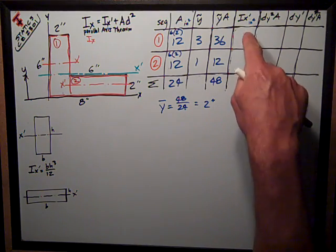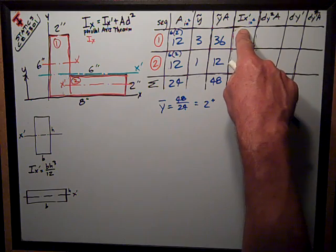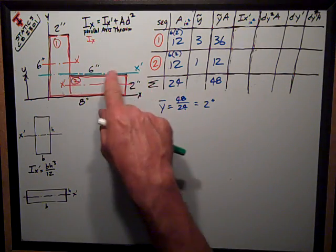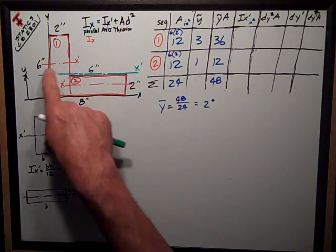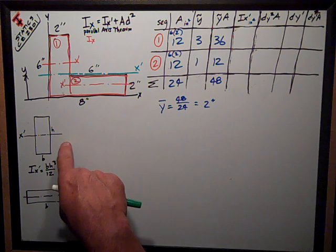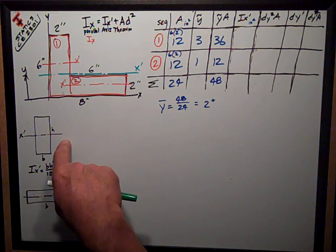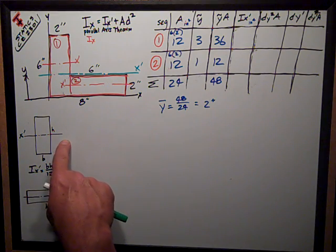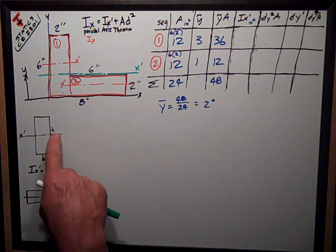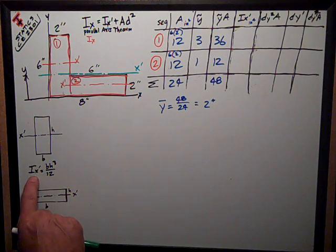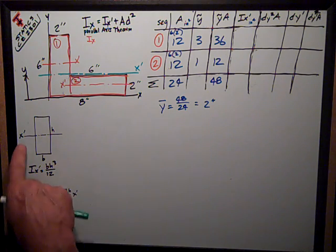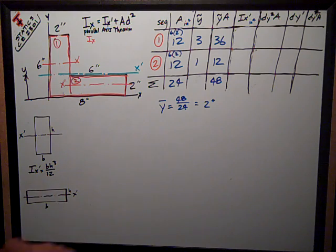Next thing I want to do is compute the ix-prime, which is the moment of inertia of each segment about its own centroidal axis, and it's been derived from using calculus. For a rectangle of dimensions b by h, the moment of inertia, ix-prime about its own centroid axis, x-prime, is bh cubed over 12.